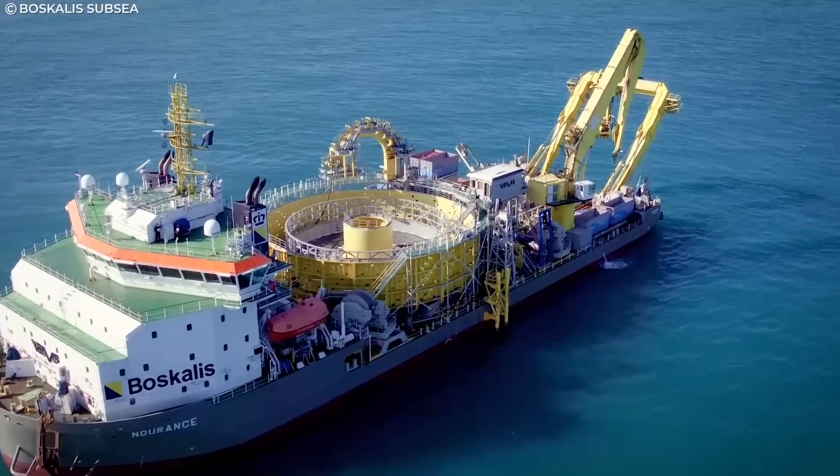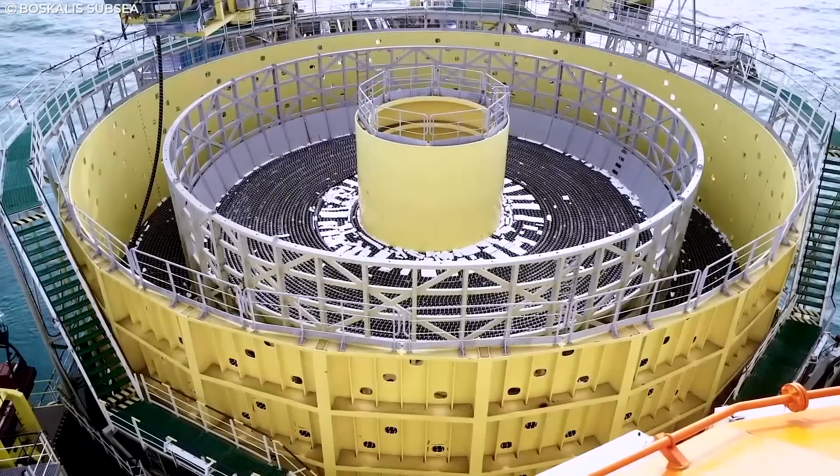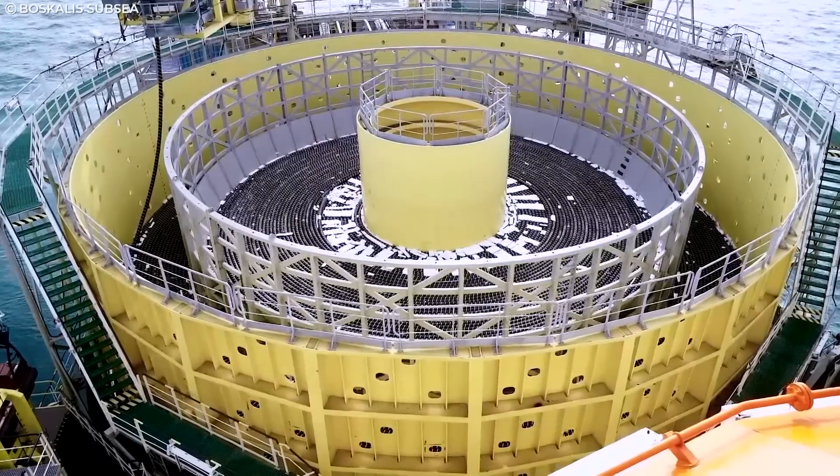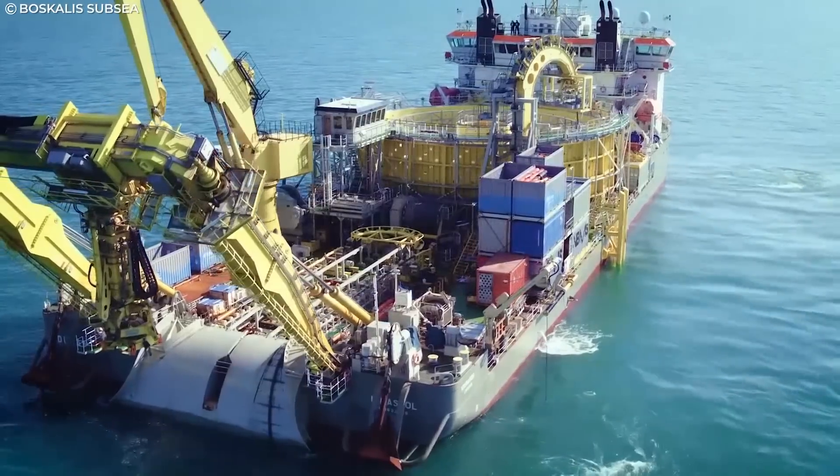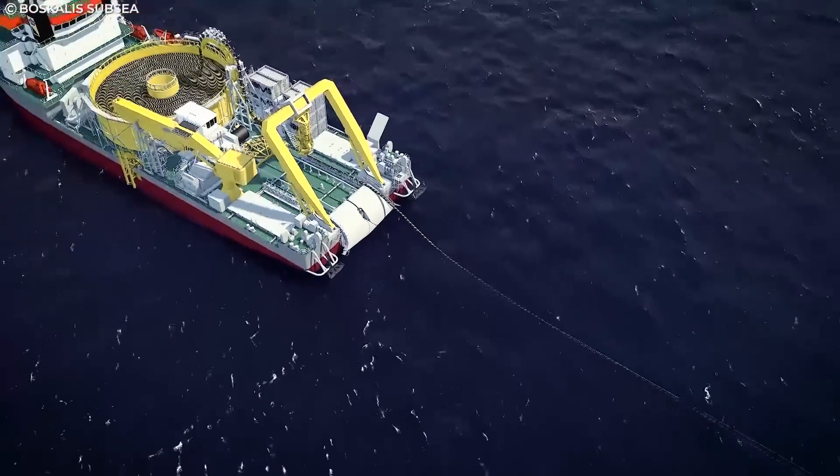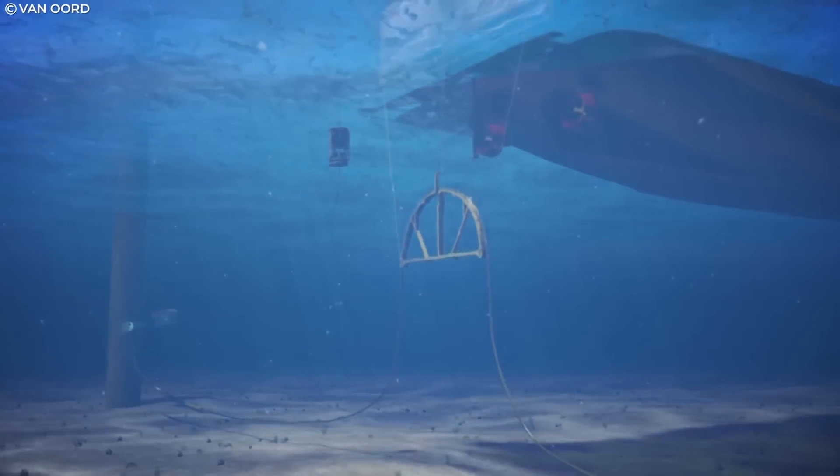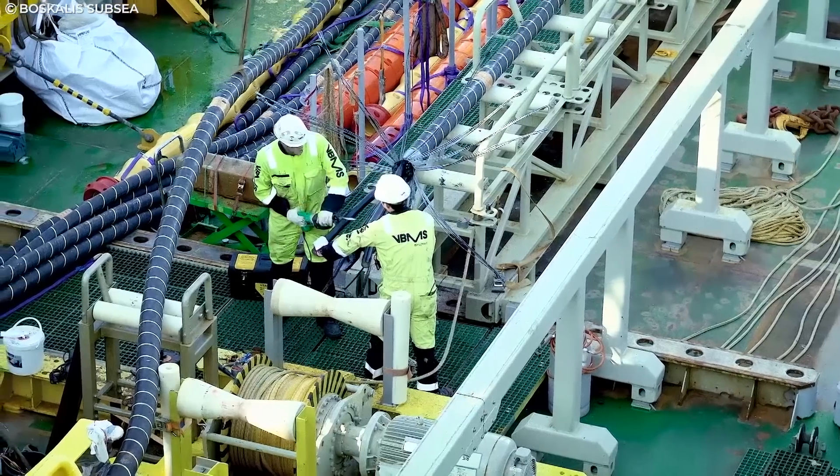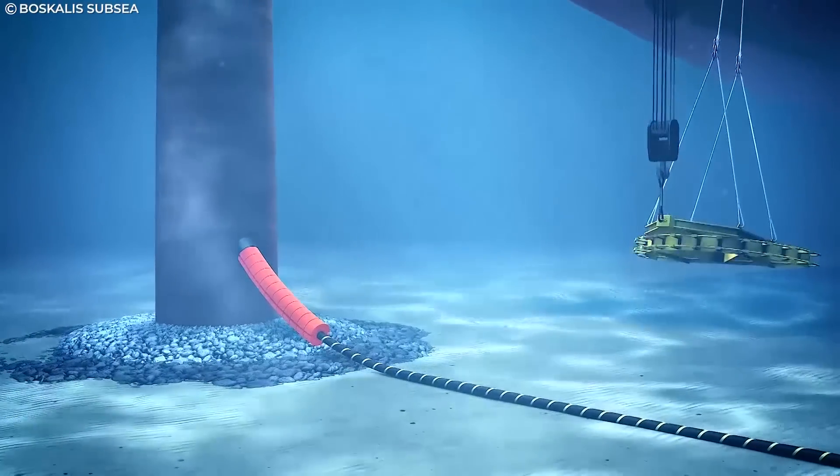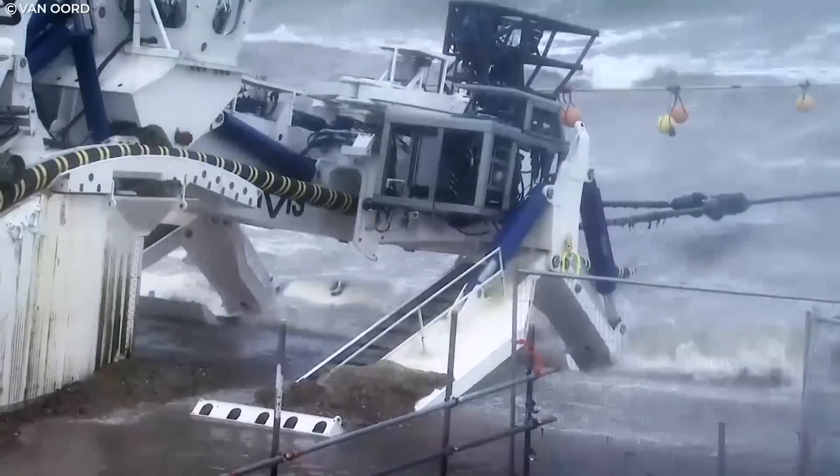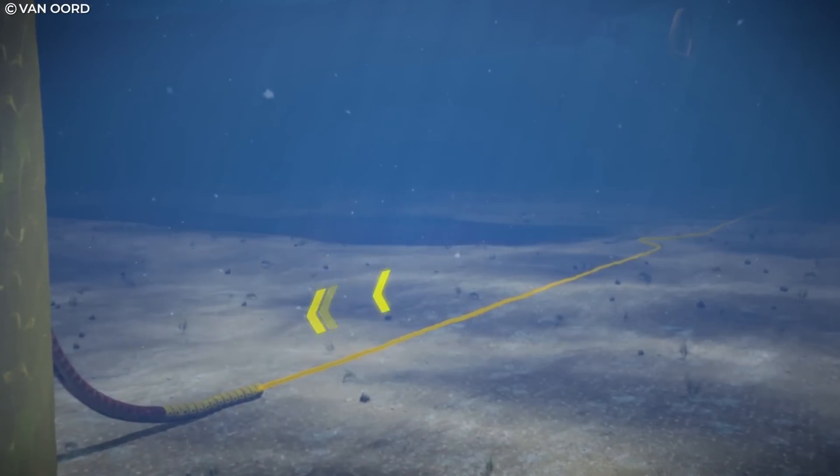These undersea cables are laid down by specialized ships called cable layers that hold thousands of miles of coiled cables on their decks. After charting a safe path, avoiding fishing zones, anchoring areas, fault lines, and other potential dangers, these ships navigate the course and slowly uncoil cable onto the ocean's surface. Buoys are used to keep the cables floating. Once the operators are satisfied and the weather is right, they cut the buoys and allow the cables to sink to the ocean floor. Underwater technicians will follow its progress to make sure that the cables do not get tangled and are being laid in the right place.